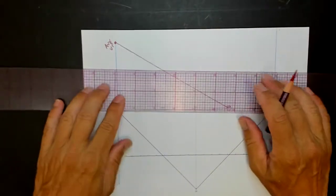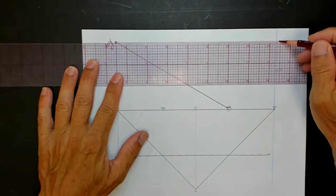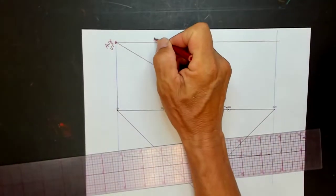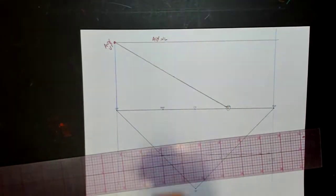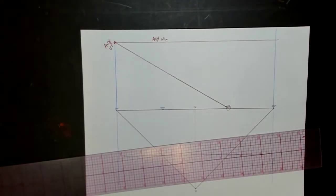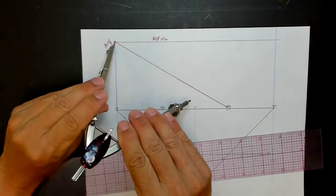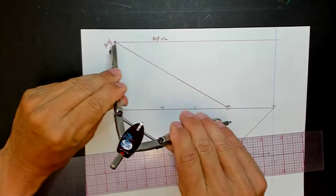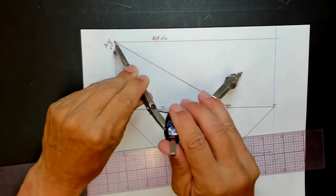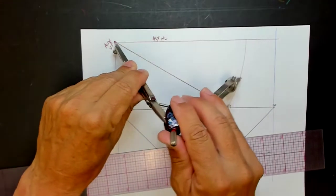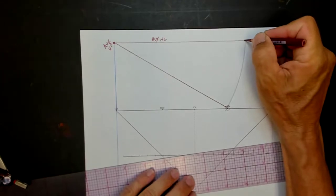And then we need a line straight across from that, and this is our auxiliary horizon line. And then to get our measuring point, you take the distance from the vanishing point to this measuring point. And you project that up and you get your auxiliary measuring point.